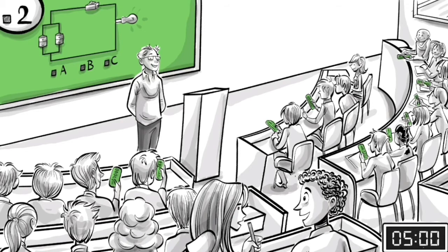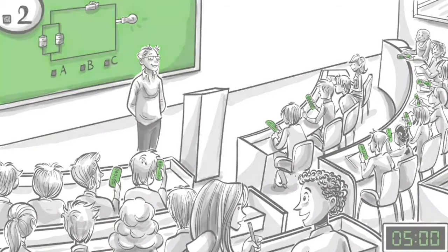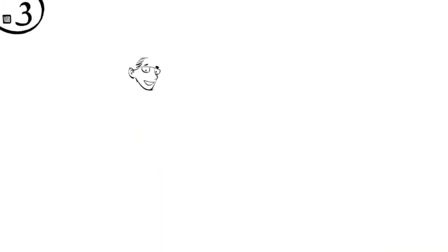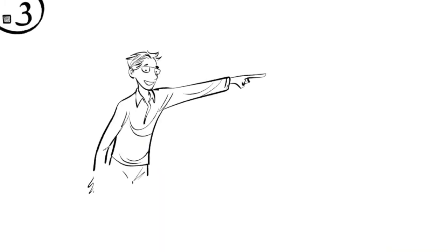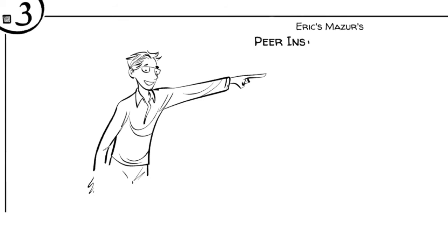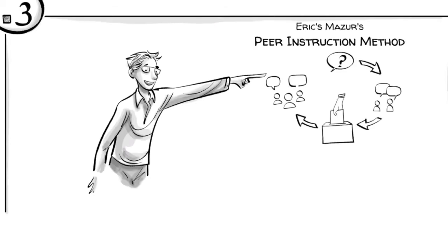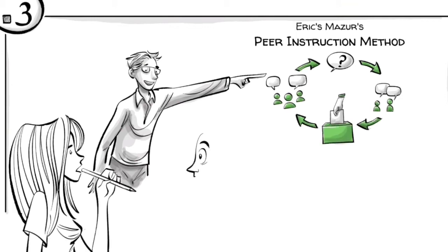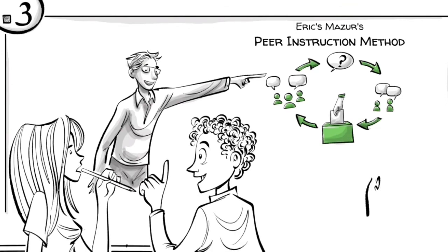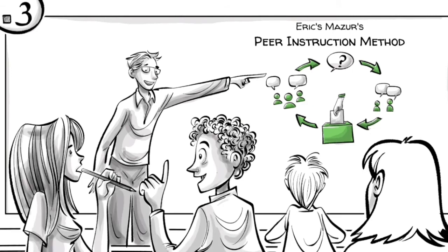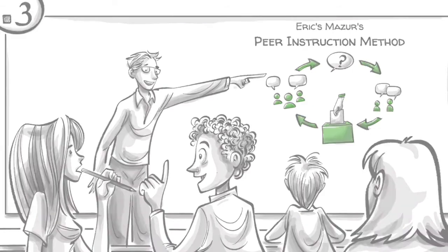Step three: without telling the students how they voted, and following Eric Mazur's peer instruction method, which involves questions, peer discussions, votes, and group discussions, the students then discuss the question and their answers with one or two classmates, ideally with someone who disagrees with their own opinion.